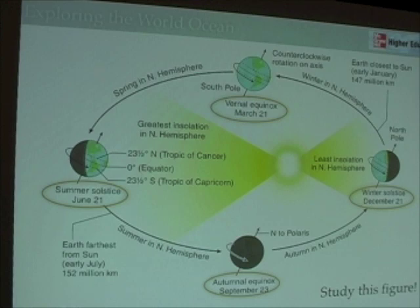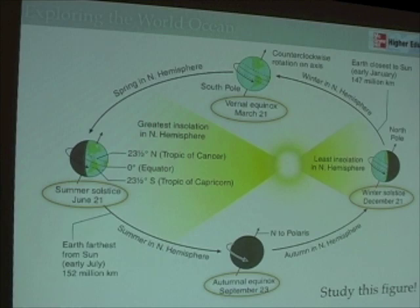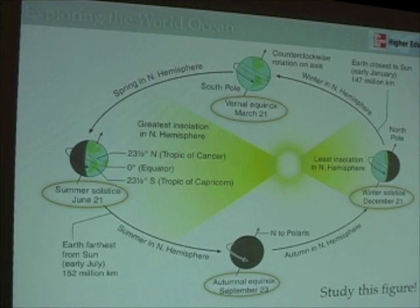These four dates — the equinoxes, when the sun is directly overhead the equator, and the solstices, which define whether the sun is over the Tropic of Capricorn or the Tropic of Cancer — mark the beginning of each season, and you should be familiar with these dates. Remember the vernal equinox is the northern hemisphere spring equinox. In the southern hemisphere, our first day of spring is their first day of fall. The summer solstice is the first day of summer in the northern hemisphere, and the autumnal equinox is the first day of fall in the northern hemisphere.